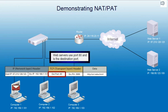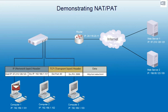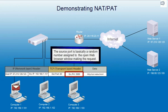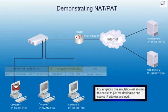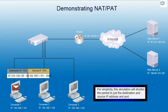Web servers use port 80 as the destination port. The source port is basically a random number assigned to the open web browser window making the request. For simplicity, this simulation will shorten the packet to just the destination and source IP address and port.